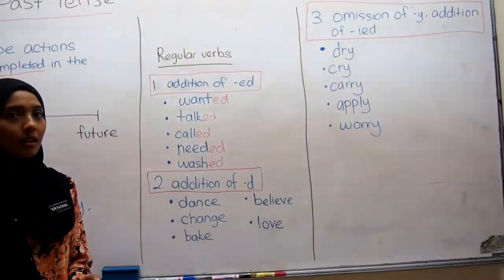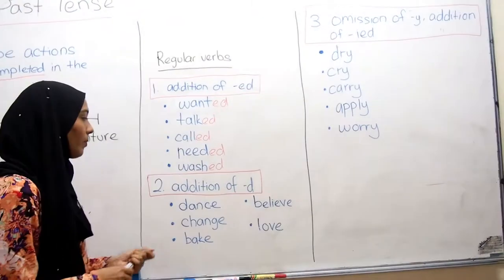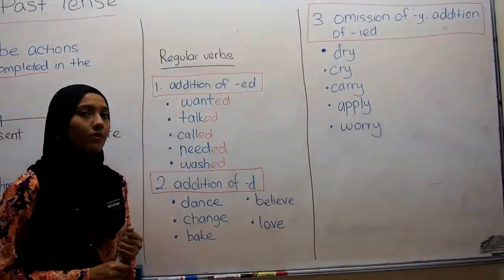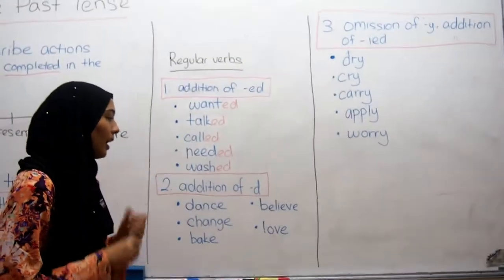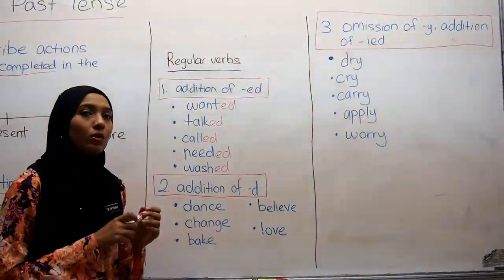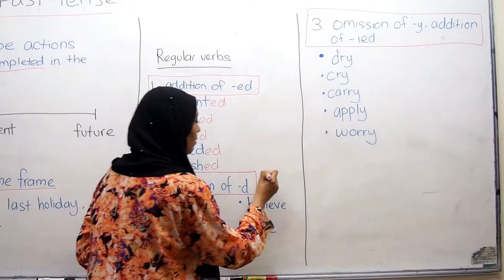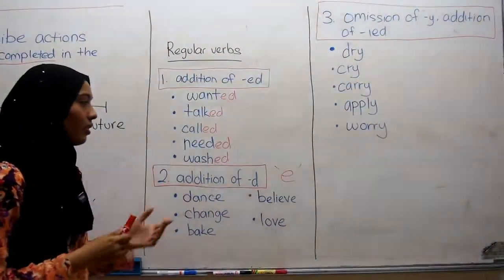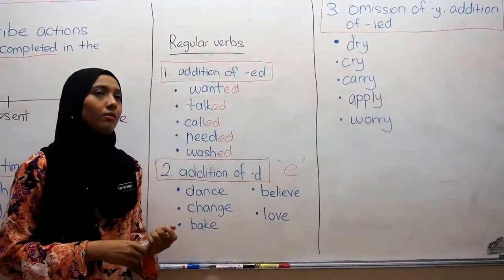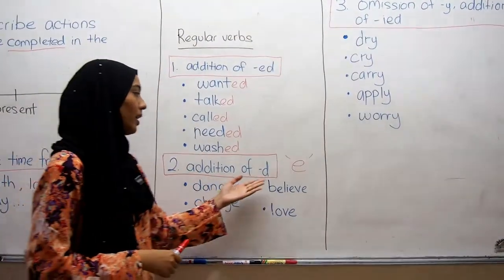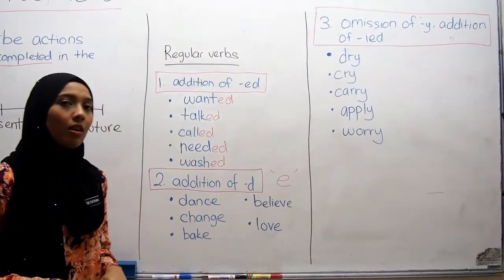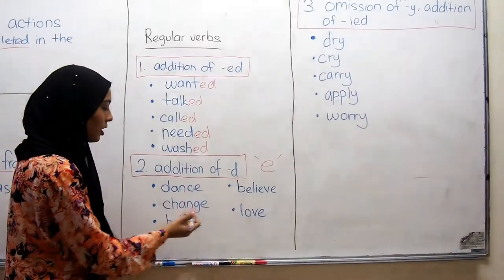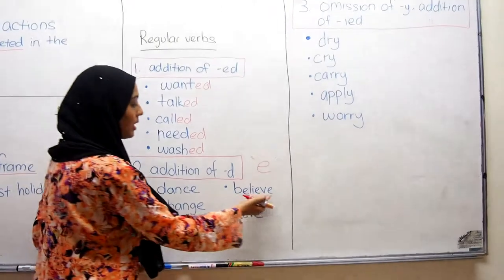Now the second rule: the addition of -d. Certain regular verbs already end with the vowel E. For these verbs, we just add -d at the end. For example: dance, change, bake, believe, and love — you simply add -d to form the simple past tense.